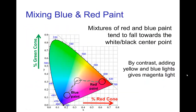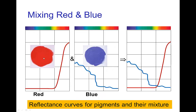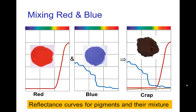Another example is mixing blue paint and red paint. The resulting mix tends to land close to the white-black center point. By contrast, mixing blue light and red light produces magenta. But we don't get magenta when mixing a red pigment and a blue pigment — if you look at the spectral reflectance curves for those two pigments, they have virtually no overlap, resulting in very little reflectance, producing a very dark and undistinguished color.